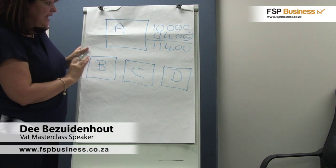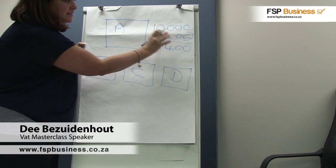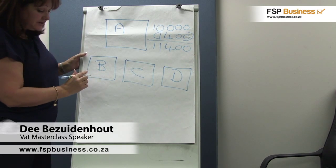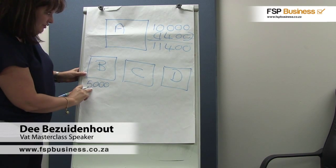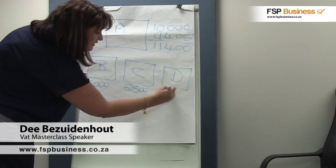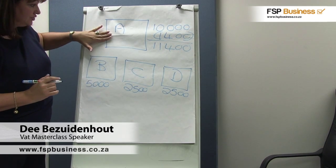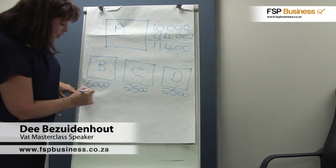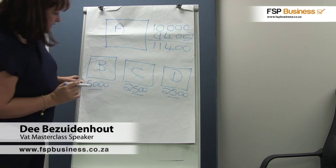Then they have to determine which portion of this tax invoice was used by which subsidiary. So they determine that Company B spent 5,000 Rand on stationery, Company C spent two and a half thousand, and Company D spent two and a half thousand. Now what Company A has to do is on-charge or recover those costs of the stationery from its individual subsidiaries.